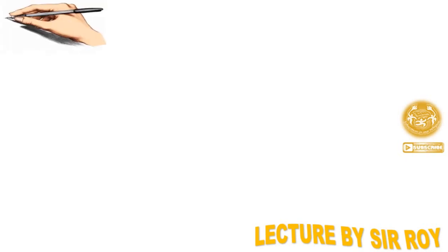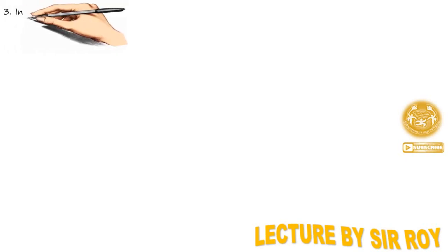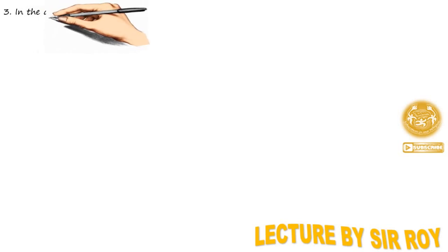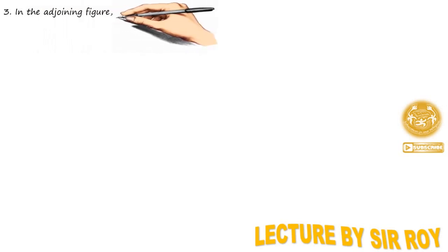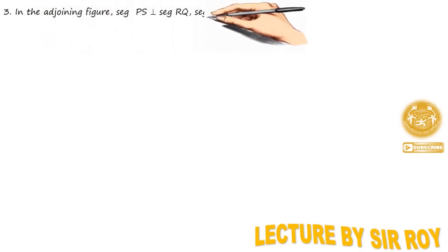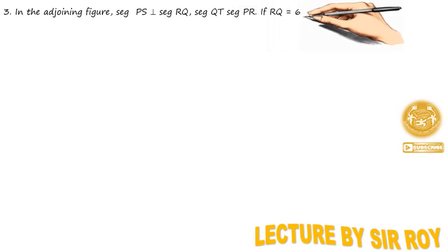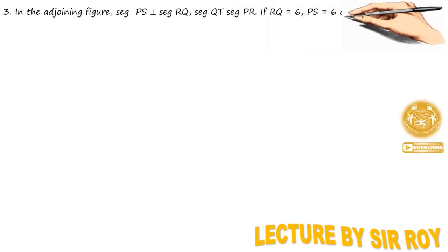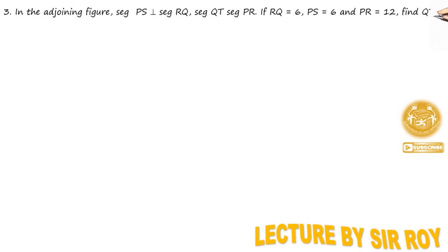Question number 3 क्या बोलता है: In the adjoining figure, segment PS is perpendicular to RQ, segment QT is perpendicular to segment PR. If RQ = 6, PS = 6, and PR = 12, you have to find QT. तो आपको यहाँ QT find करना है — पूरे question को एक diagram के ज़रिये समझते हैं।